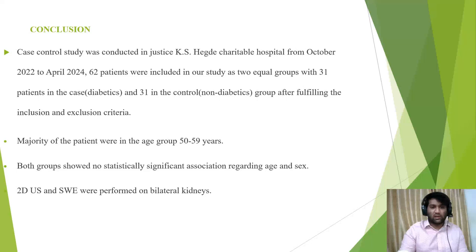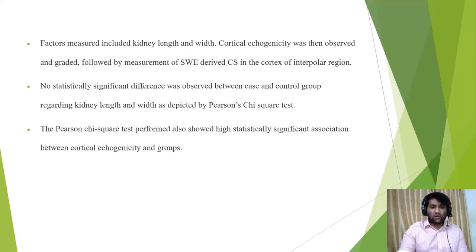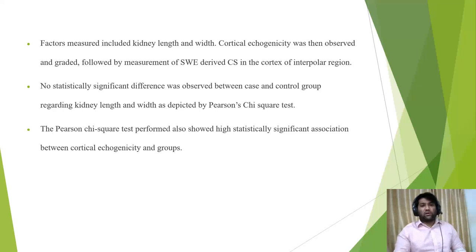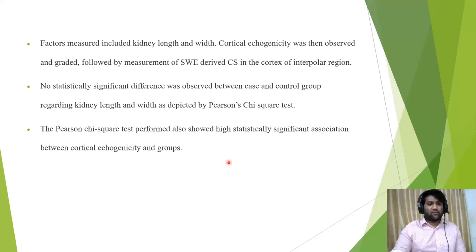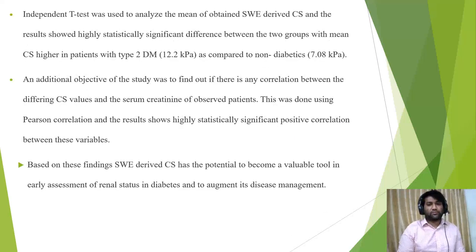In conclusion, this was a case-control study with 31 patients in each group, majority aged 50 to 59 years. Factors measured included kidney width, length, and cortical echogenicity — which was observed and graded — and SWE was measured in the interpolar region. No statistical difference was observed in kidney length and width. There was a high statistically significant difference in cortical echogenicity between the groups.